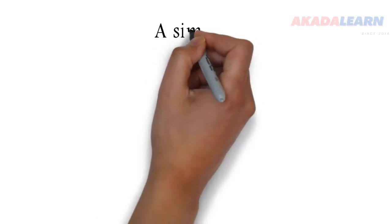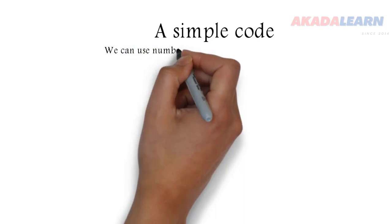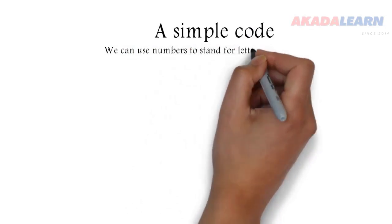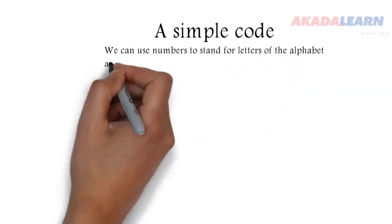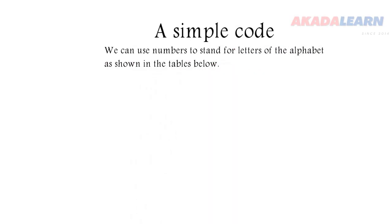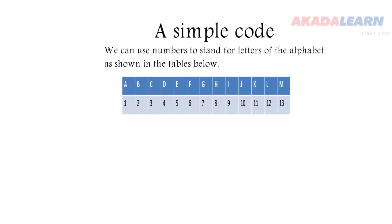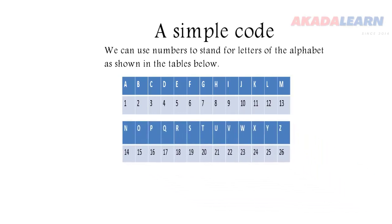So let's look at a simple code. We can use numbers to stand for letters of the alphabet, as shown in the tables below. So from the table, we can see clearly that A stands for 1, B stands for 2, K stands for 11, L stands for 12, also in the other table there, we can see that N stands for 14, and so on and so forth.